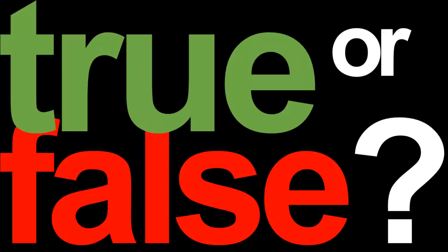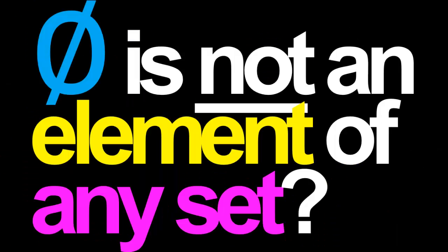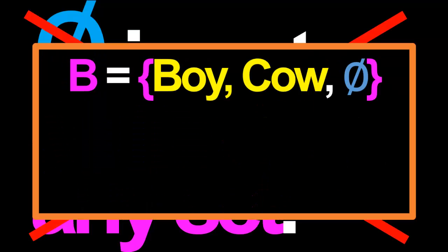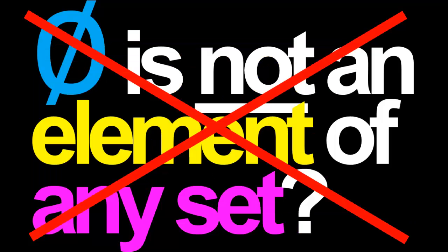Let's now consider the opposite claim: the empty set is not an element of any set. Again, false. Here's a counter example. The set B consists of precisely three elements, namely boy, cow, and the empty set. The empty set is indeed one of the elements of B. Therefore, the claim that the empty set is never an element of any set is false.